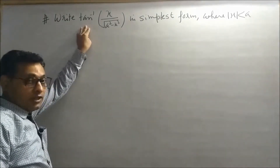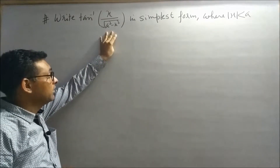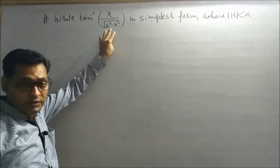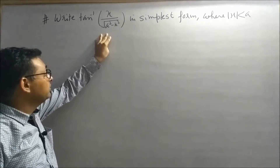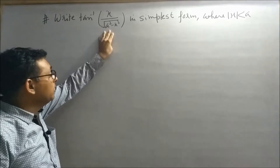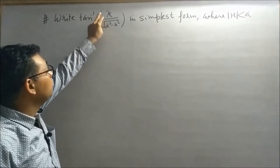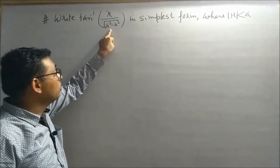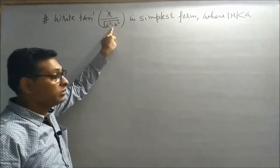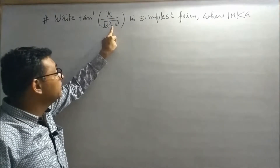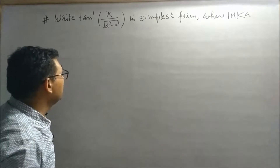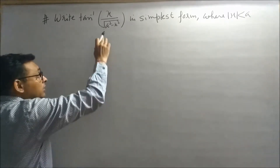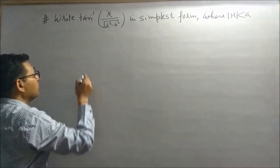This is the approach to convert it. We will use a trigonometric substitution to change the form. The tan inverse expression will be resolved by converting the numerator to sin and the denominator to cos, so that tan inverse of (sin/cos) becomes tan inverse of tan. The denominator involves √(a² - x²).